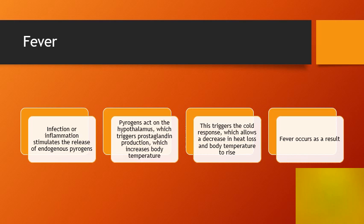Infection or inflammation caused by bacteria, a virus, or some other pathogen will stimulate endogenous pyrogens. Those pyrogens act on the hypothalamus, which triggers prostaglandin production, which increases body temperature. This triggers a cold response including shivering, vasoconstriction, and a decrease in peripheral perfusion — all of which help decrease heat loss — resulting in fever.